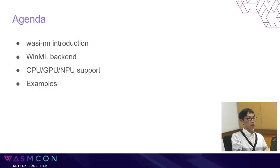We will firstly introduce WCN and Windows Machine Learning, the WinML backend, as well as how this backend is implemented, so you can add your own backend if you want to. Then, choose a targeted device — CPU, GPU, or NPU. At last, we will briefly go through an image classification example about how to use the WCN WinML backend to perform inference on different devices.